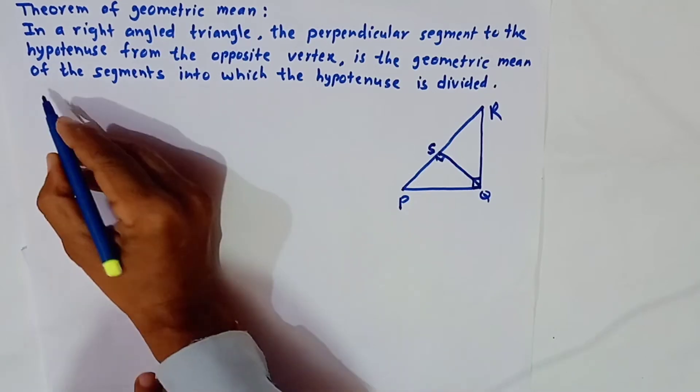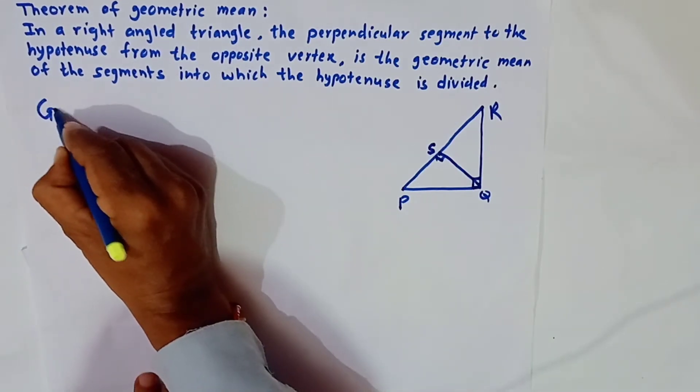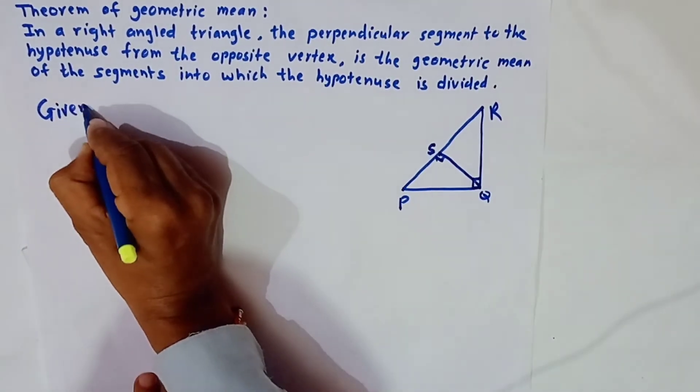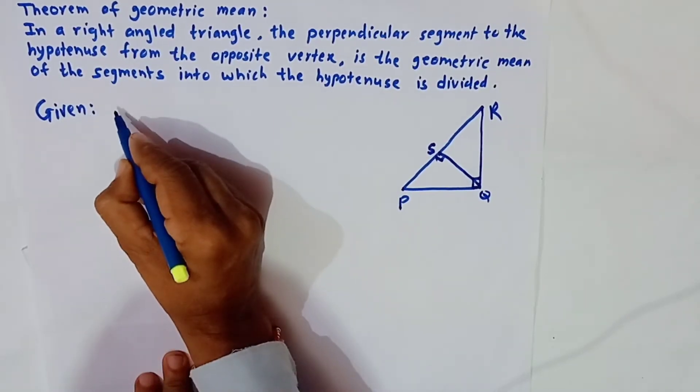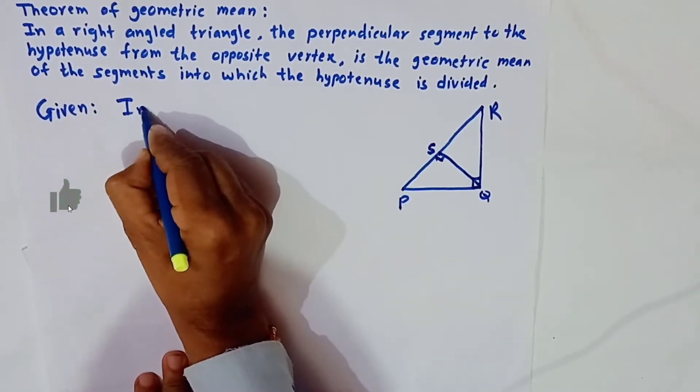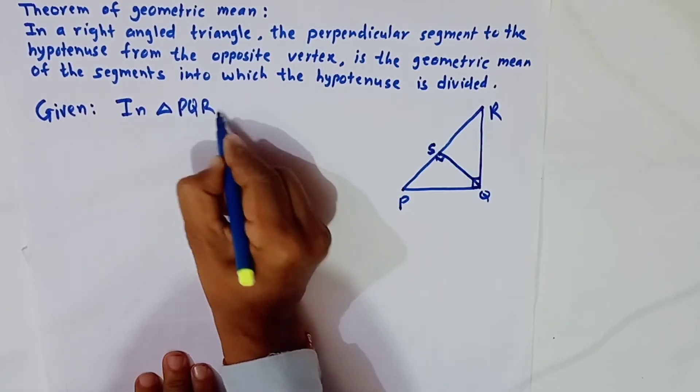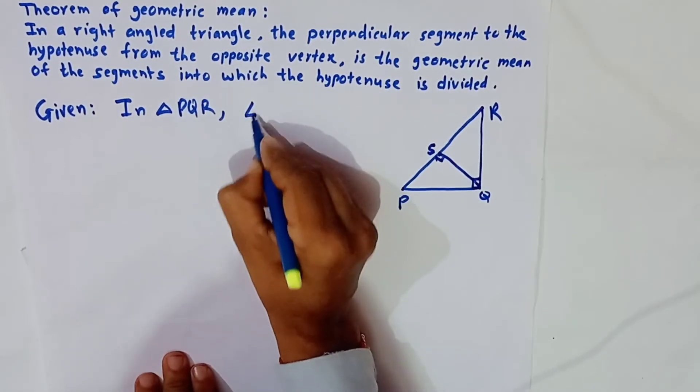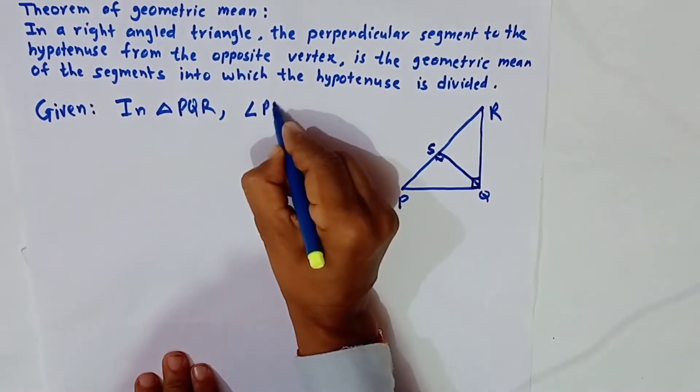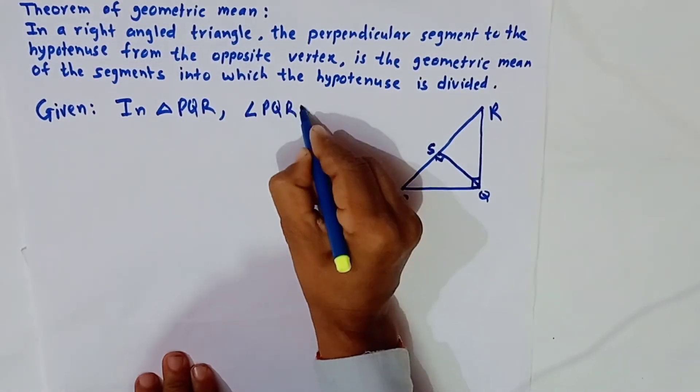What is given to us? We are given a triangle. In triangle PQR, angle PQR equals 90 degrees.